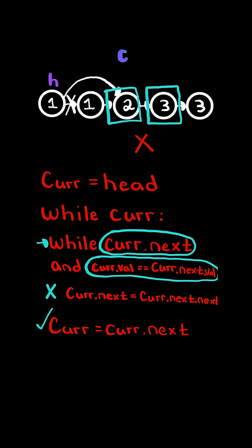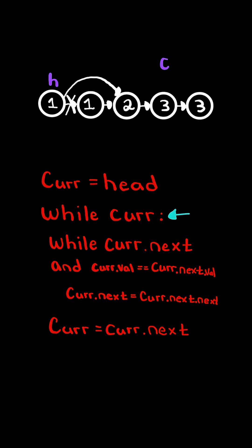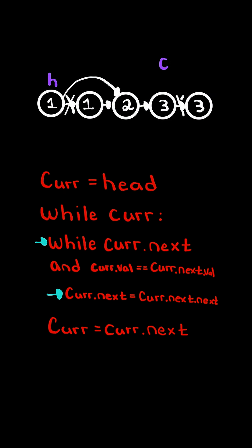We advance current by setting current equal to current.next, and we continue this algorithm while current is not null. Now the conditions for the inner loop are true since current.value equals current.next.value, so we update current.next to point to current.next.next.